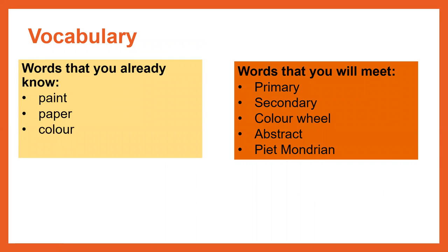Let's look at some vocabulary that we're going to meet in this first session. There are some words here that we should already know. We know the word paint, paper and colour. These are the words that we're going to meet along the way today: primary, secondary, colour wheel, abstract and Pierre Mondrian.